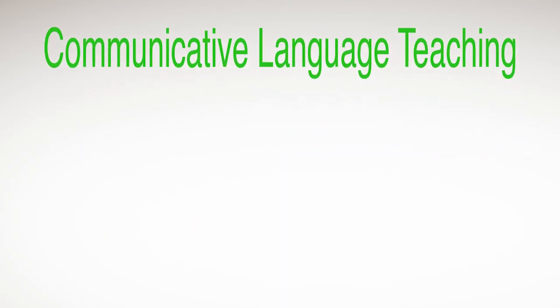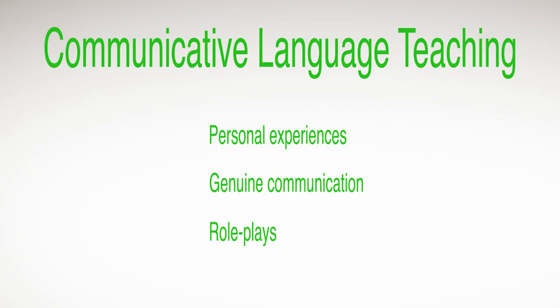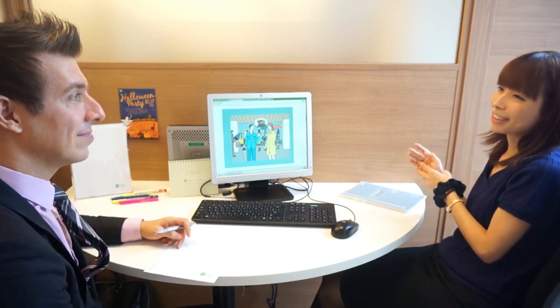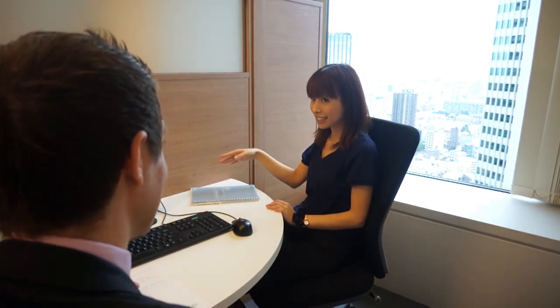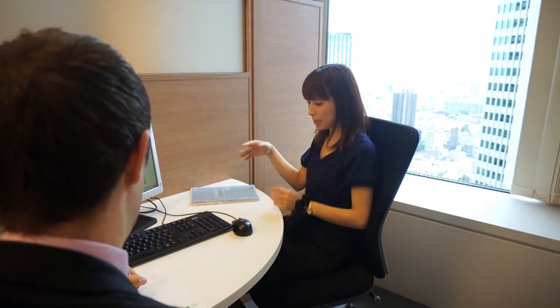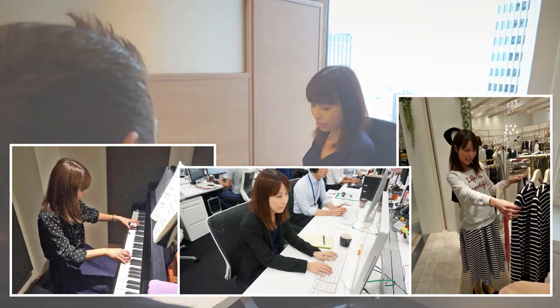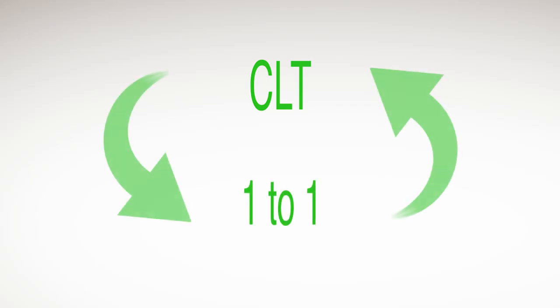Another element of CLT is making regular use of students' personal experiences in classes with the intention of making classroom communication as genuine as possible. At GABA, the emphasis in lessons is placed on communicating through interaction and encouraging clients to speak as much as possible. Clients are shown how they can use English in a practical way by participating in practice sessions and role plays based on their own experiences. These aspects of CLT work extremely effectively with the one-to-one lesson format.